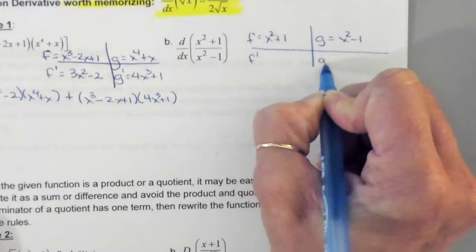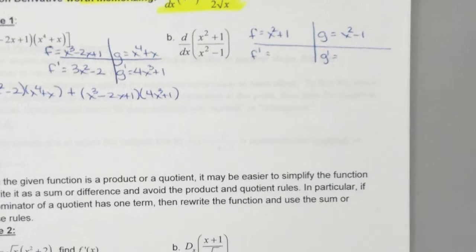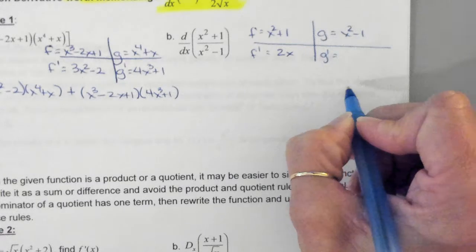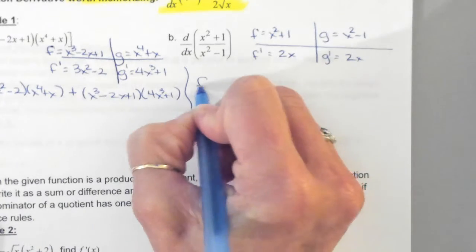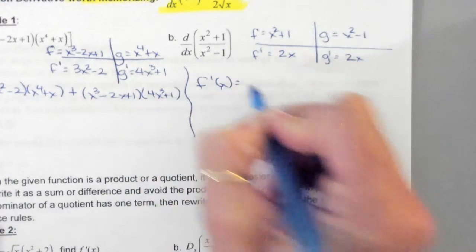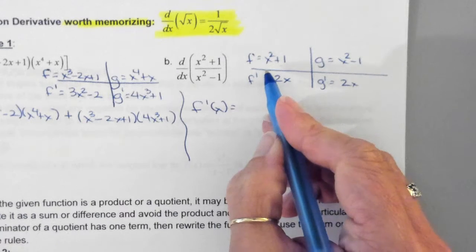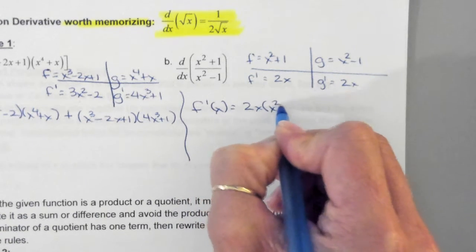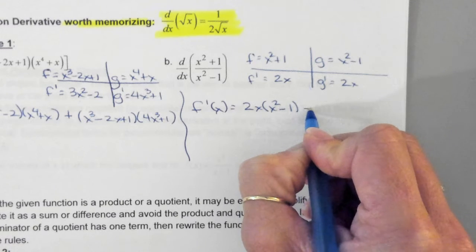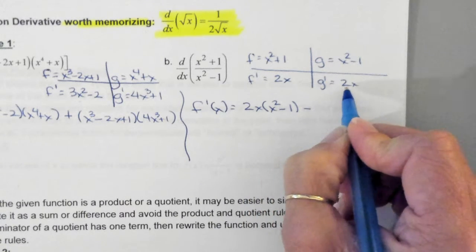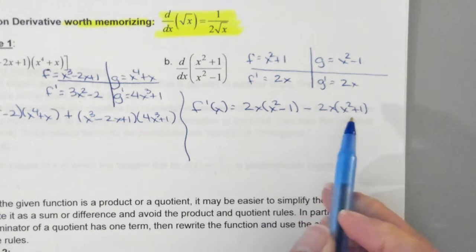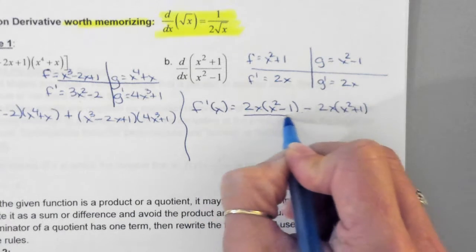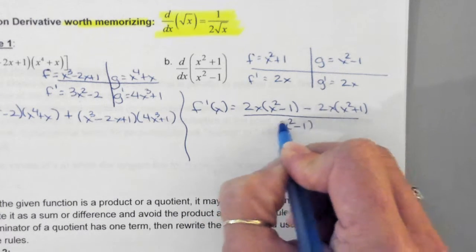So we're going to find the derivative of each one. What's the derivative of F? 2X. What's the derivative of G? 2X. So now we're going to use the quotient rule and we're going to say that F prime of X is equal to F prime times G, so this is 2X times X squared minus 1, minus FG prime. So I'm going to put the G prime first, 2X times X squared plus 1. Remember, commutative property for multiplication, doesn't matter. And this is all over G squared, which is X squared minus 1 squared.